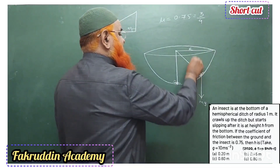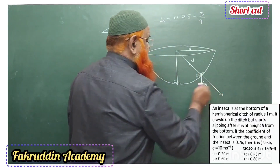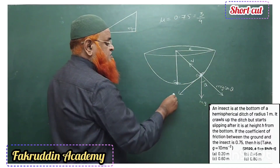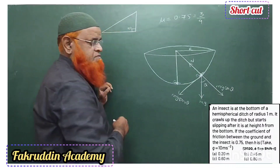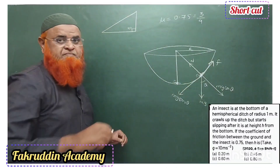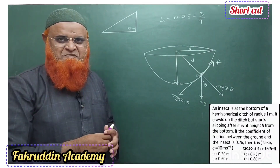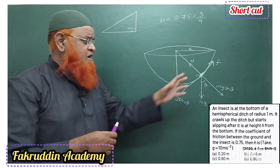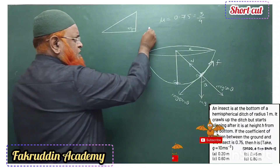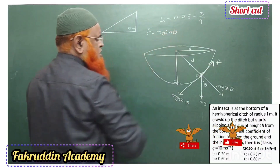The normal reaction acts outward from the surface. If the angle is theta, then the component in one direction is mg cosθ and in the other direction is mg sinθ. There is also a friction force acting along the surface. All four forces — mg, normal reaction, mg sinθ, mg cosθ, and friction — are counterbalancing each other.